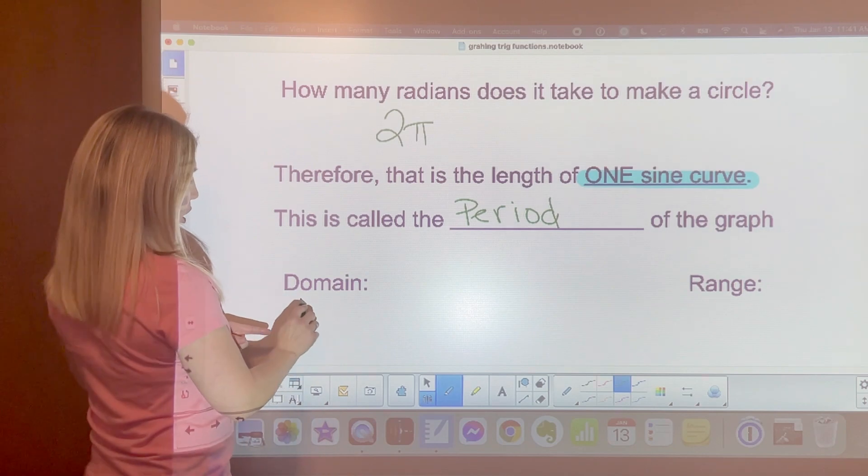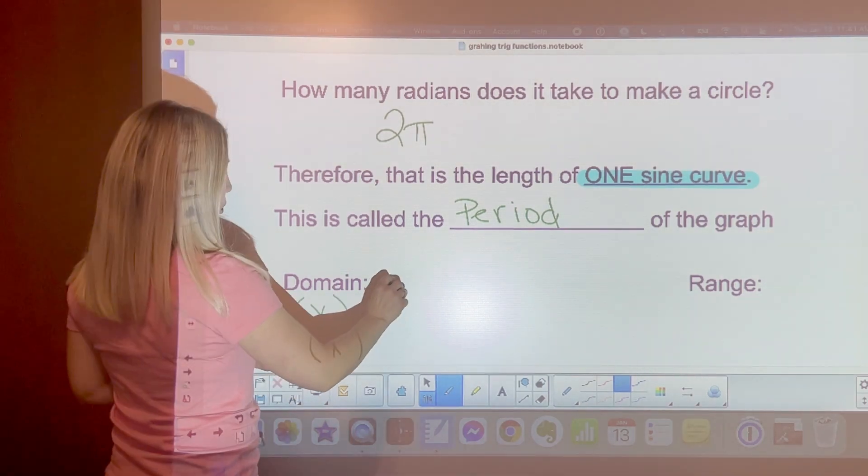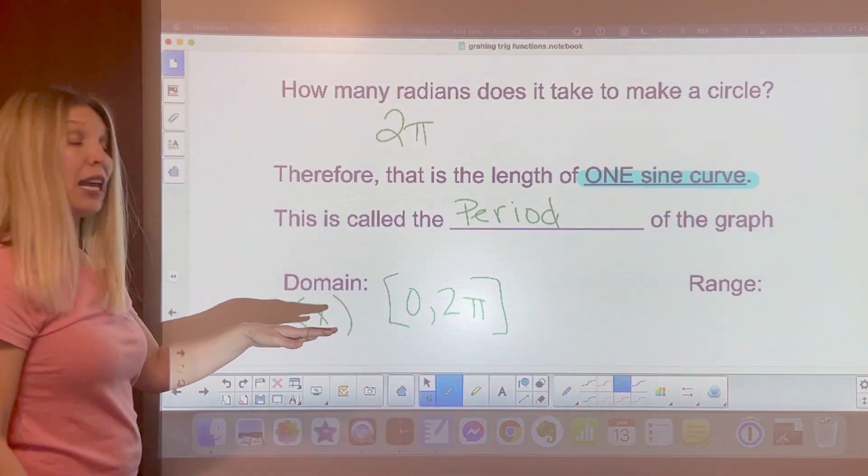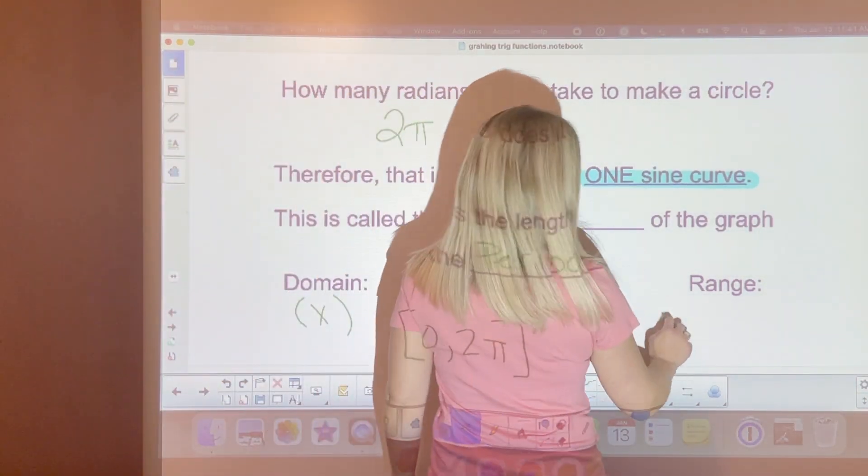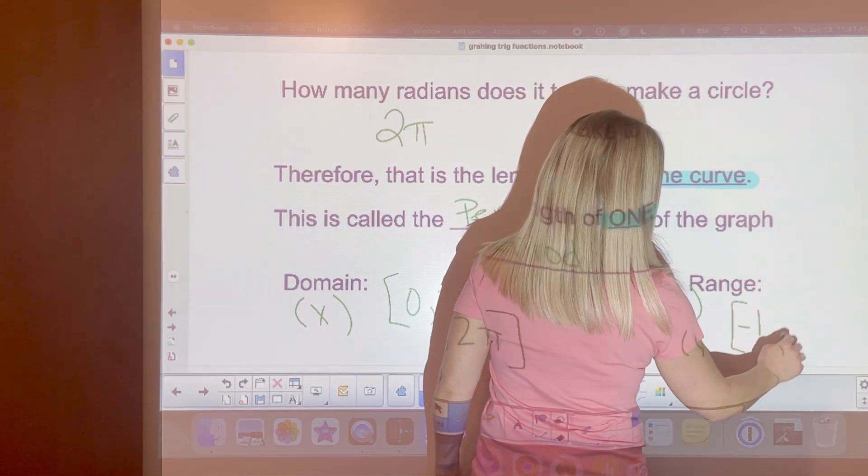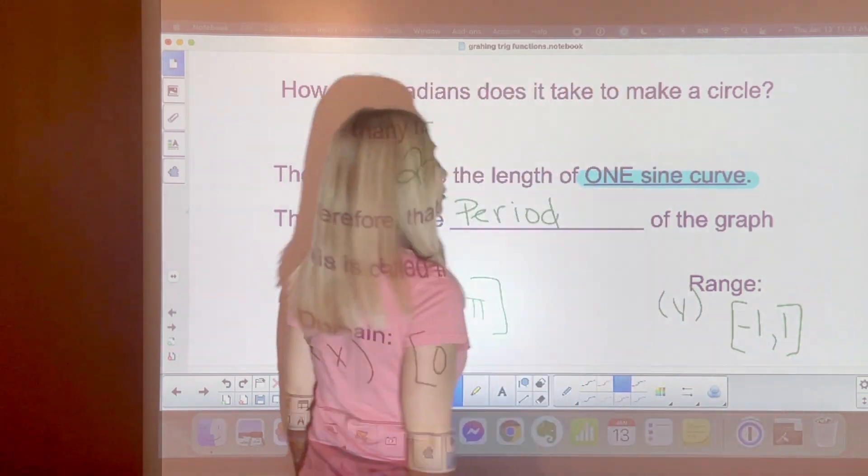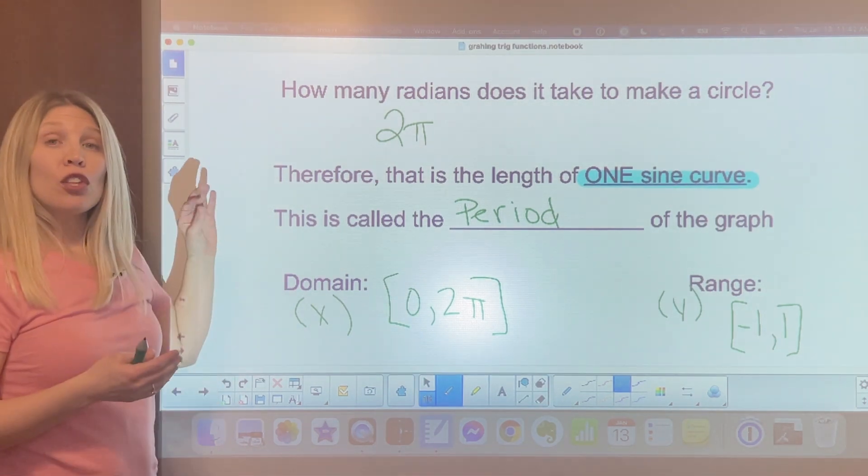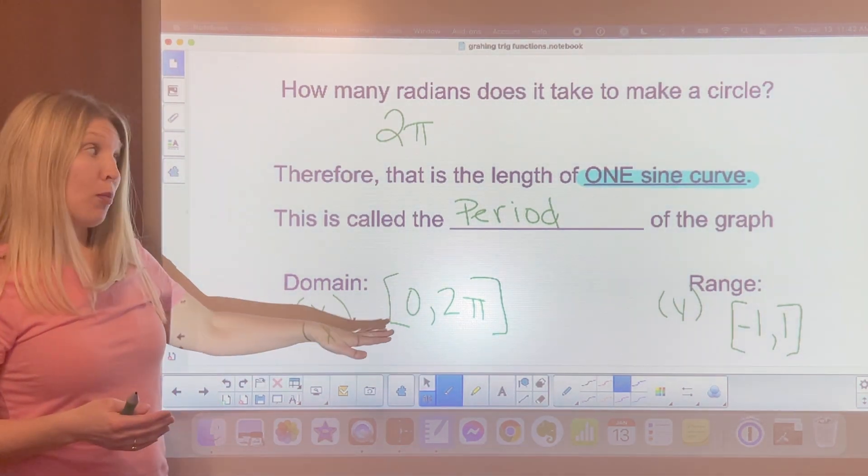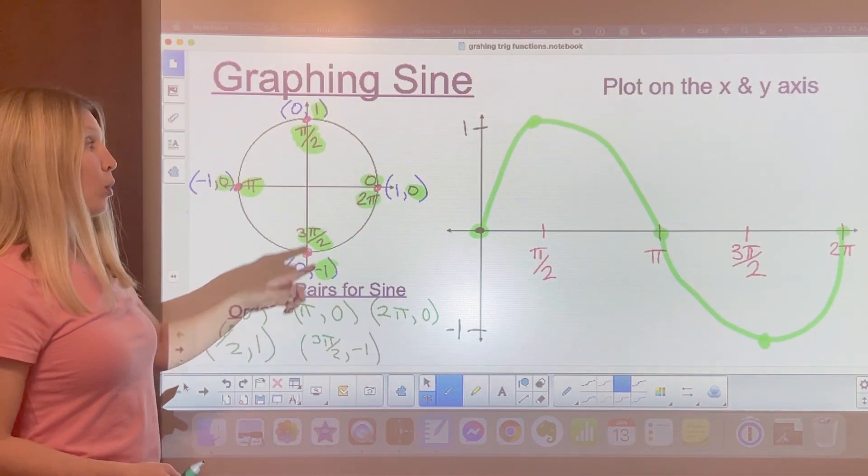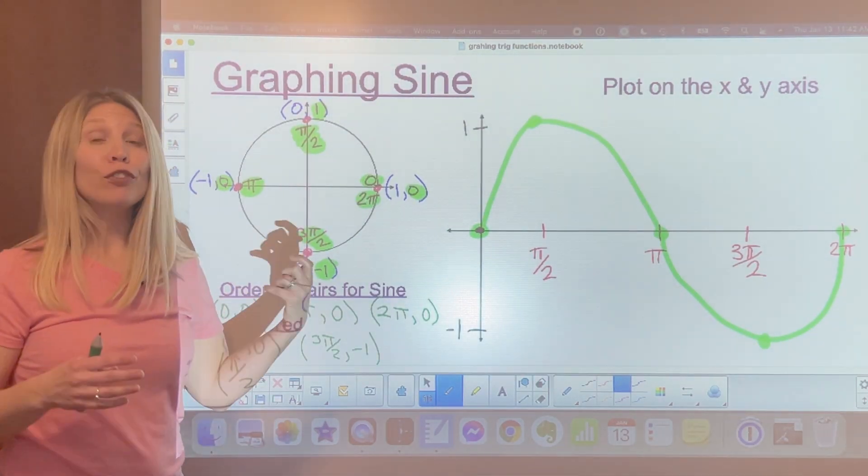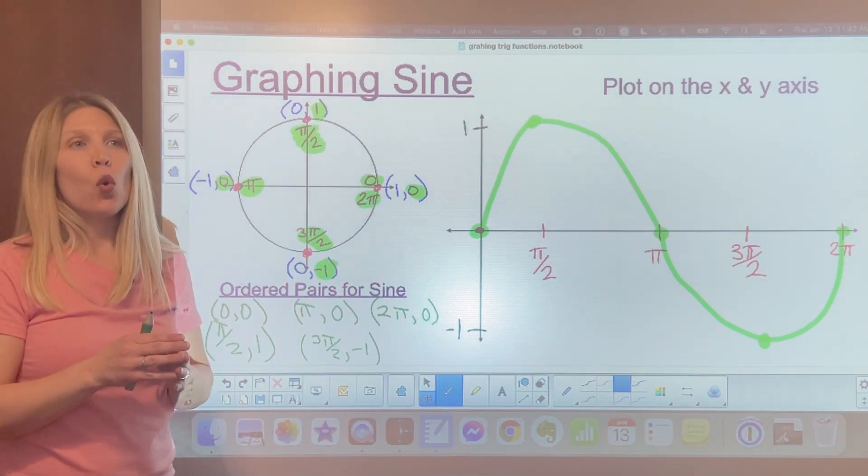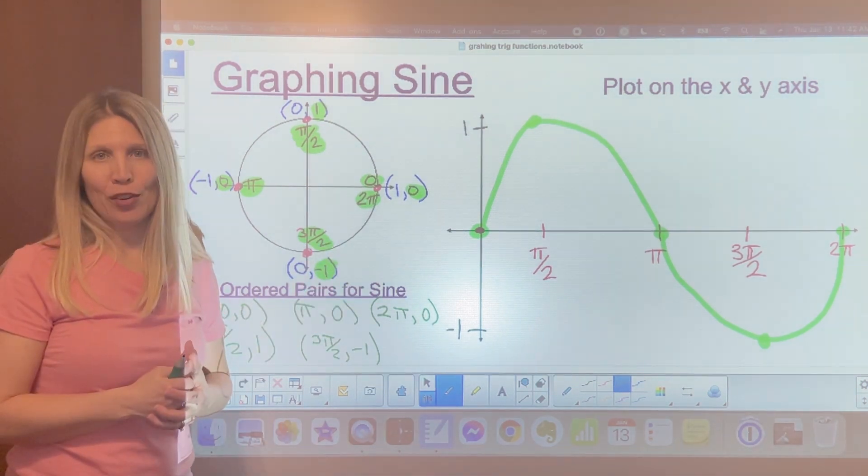Therefore that is one length of one sine curve and this is called the period of the graph. The domain, these are our x values, remember? Our domain went from 0 all the way to 2 pi because those are the values we included. And our range, remember, is our y values and our range went from negative 1 to 1. Anytime you're asked to graph the basic sine graph, you're going to look at this domain and that range and this will be your basic graph. From here you can repeat it or the teacher might ask you to stretch it or to shift it up and down. But this is your basic sine graph.